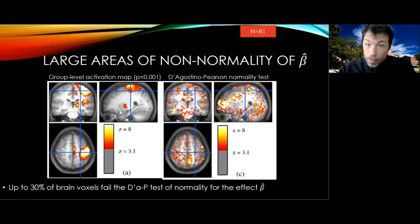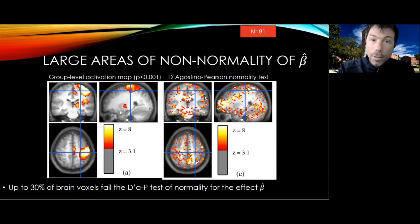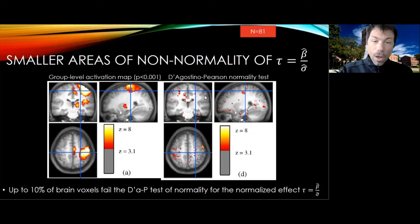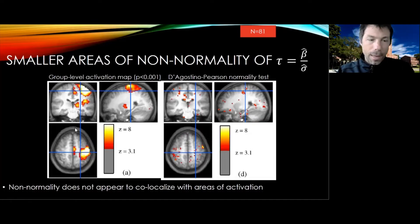On top of that, the distribution of the estimators is just not normal. Using a D'Agostino-Pearson normality test, it turns out that the parameter estimate beta-hat is just not normal — about 30% of voxels fail the test, meaning they're not normally distributed. If you scale by variance, you still get some non-normality in about 10% of the brain, although it doesn't quite co-localize with the regions of activation, so it's unclear if it's playing a role in the results.